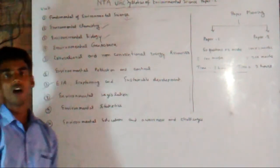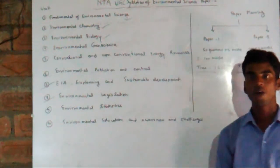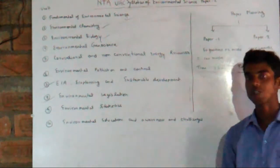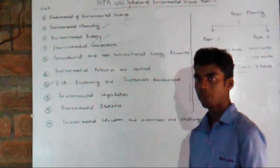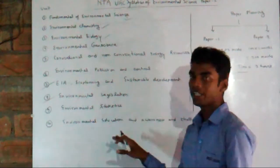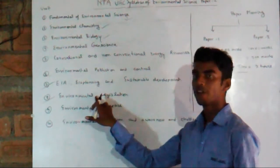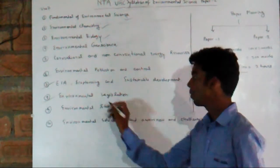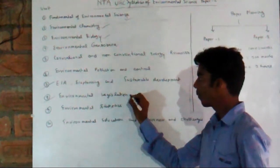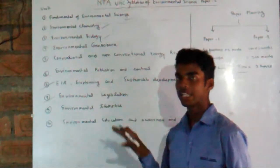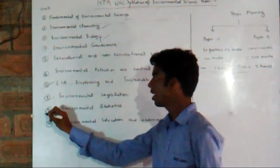Unit 8 covers environmental legislation, which is also a very important topic. Environmental legislation means all activities done by humans will be controlled by laws made by authorized bodies. This helps maintain the ecosystem, reduce biodiversity loss, and regulate many types of environmental problems. We shall thoroughly discuss each piece of legislation related to water, air, land, and noise.